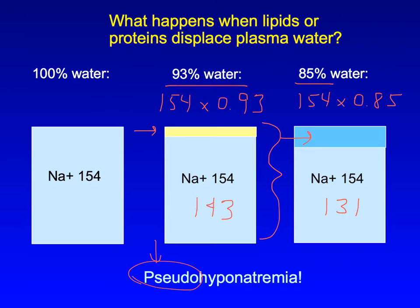Note that the plasma water itself has a normal osmolality, so no osmotic shifts occur across cell membranes.